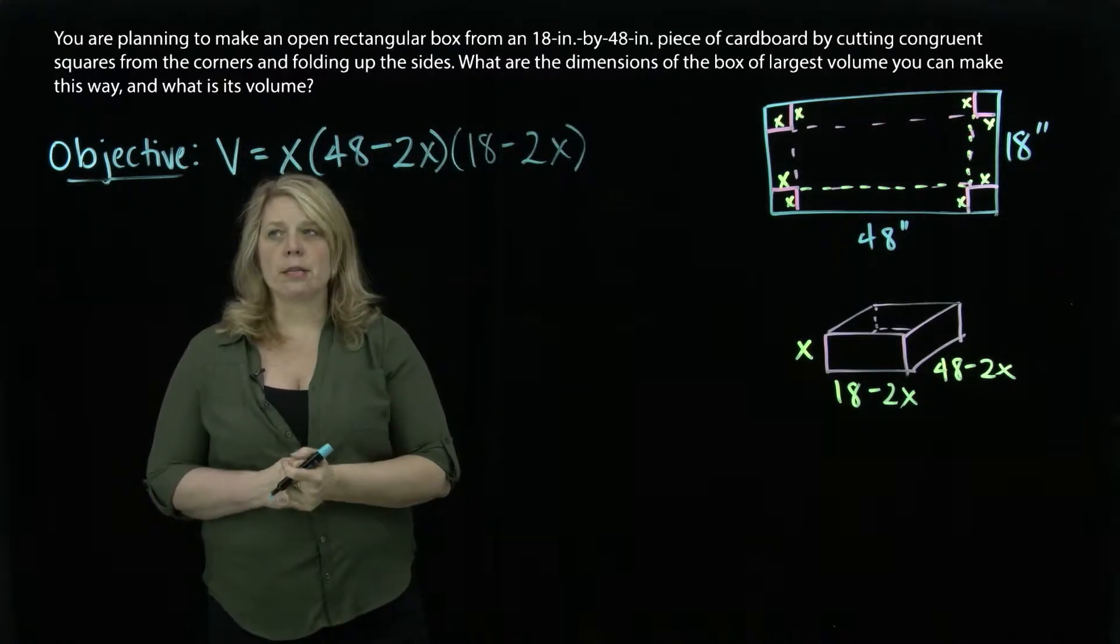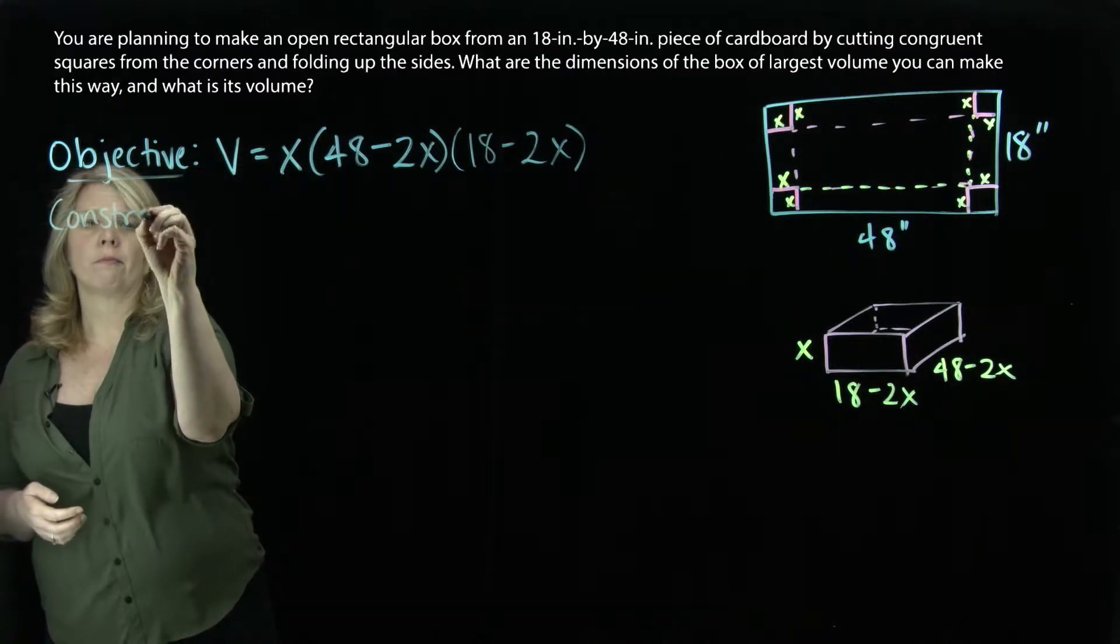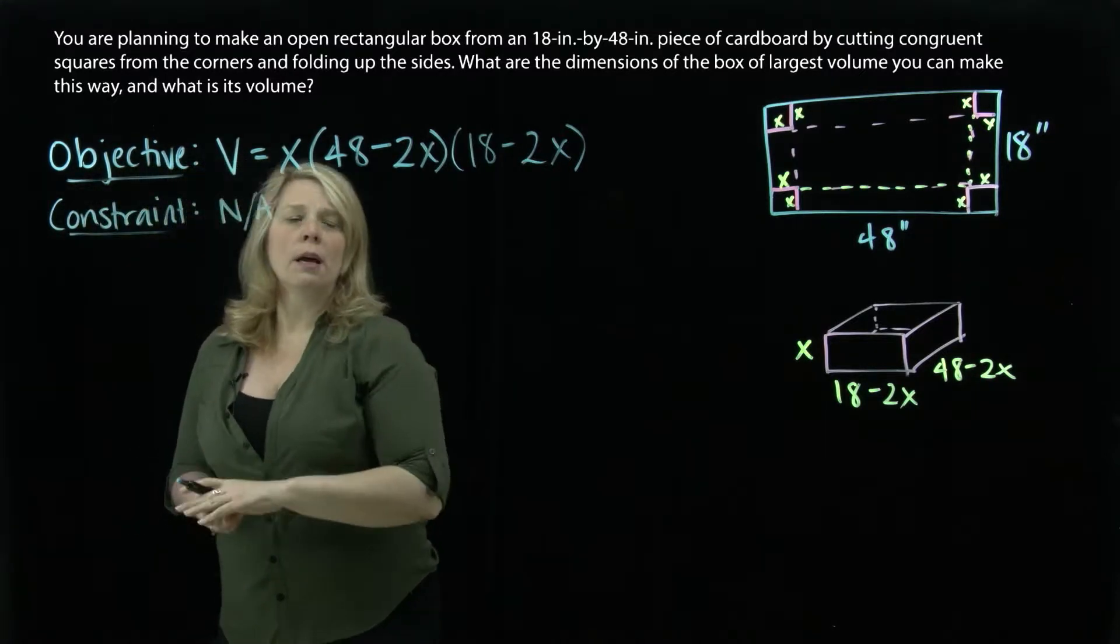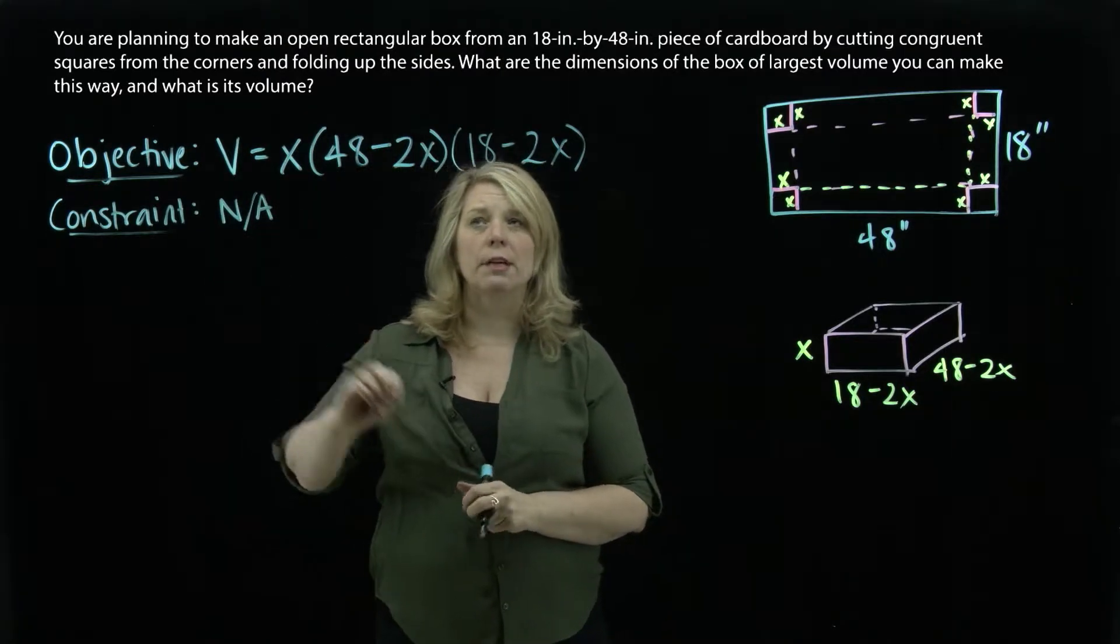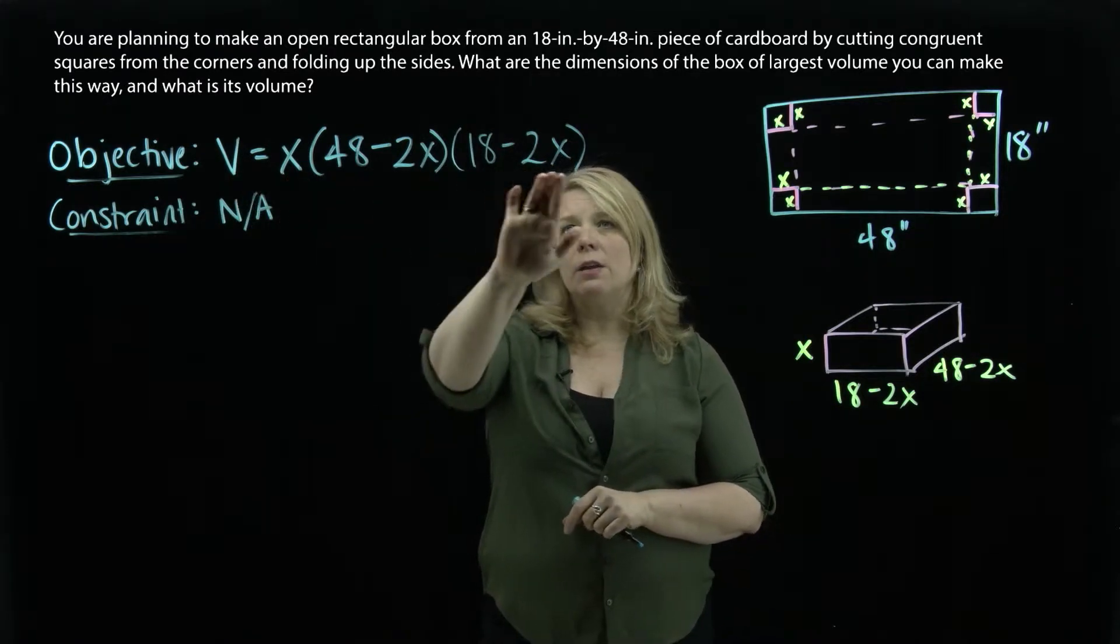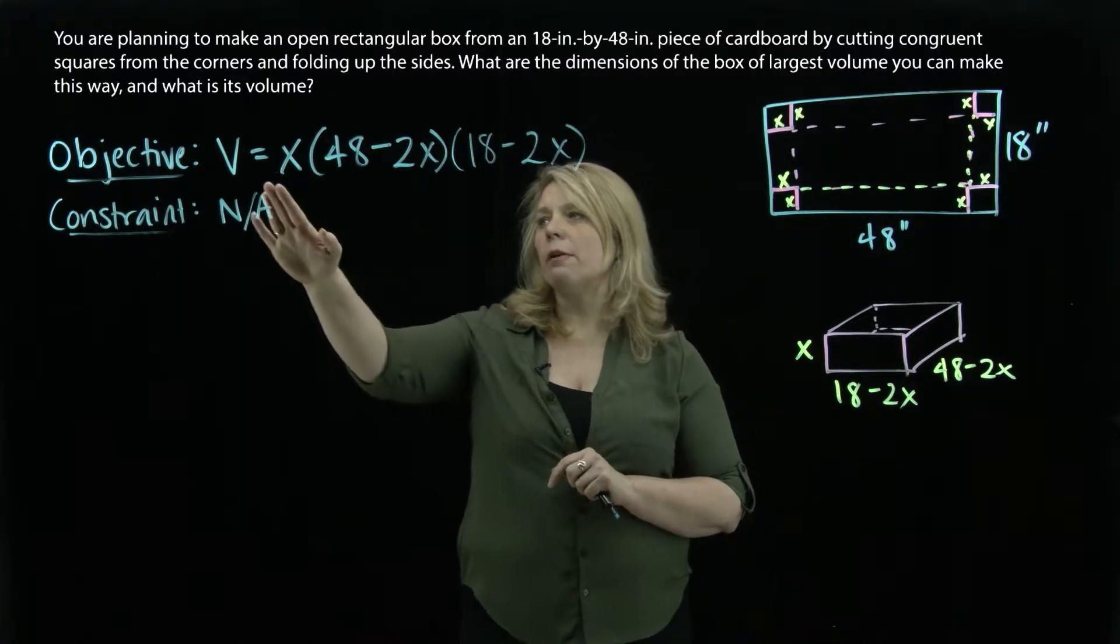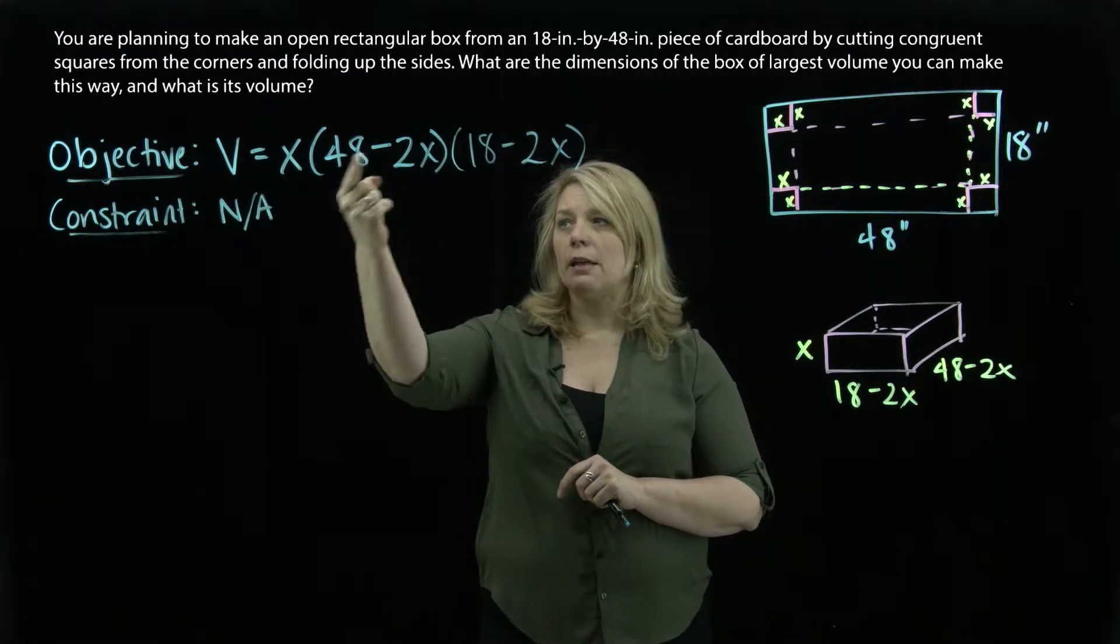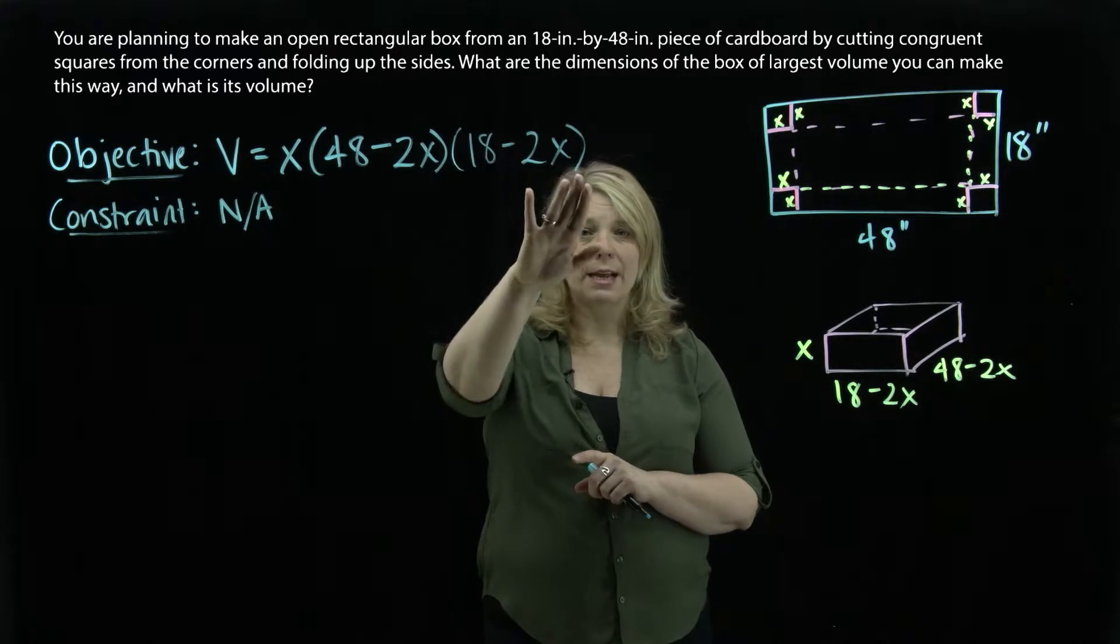Another thing that we often do in these problems is think about a constraint. We actually don't need a constraint in this one. So I'm just going to put not applicable in this problem. The volume equation that we have here is just in terms of one variable. We use that constraint often when we've got an objective function that we want to maximize or minimize and it includes more than one variable. Depending on how I set up this problem, maybe that would have happened if I started with a volume that is L times W times H, length times width times height. My constraint maybe would have involved how I relate the length, width, and height to this x variable.